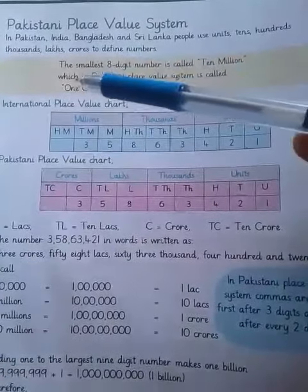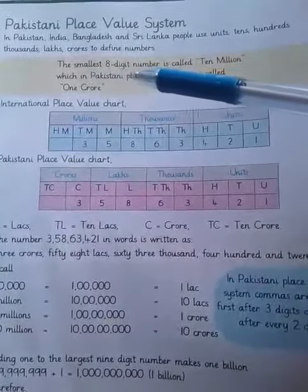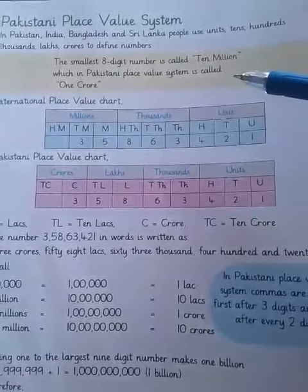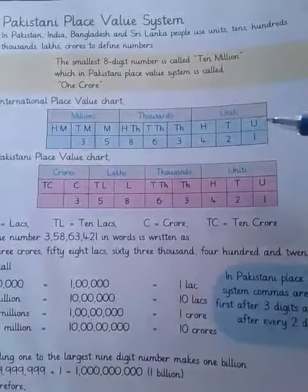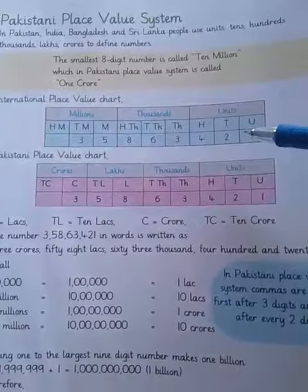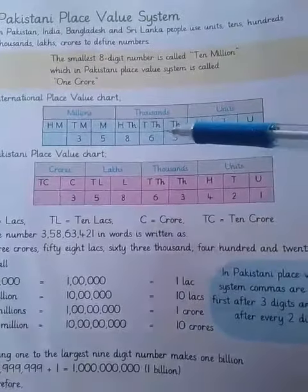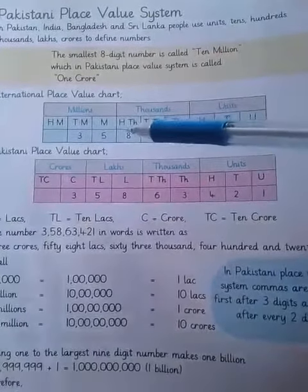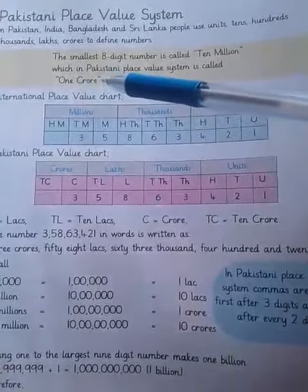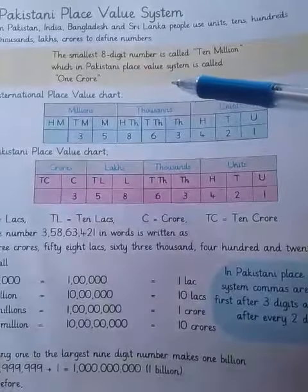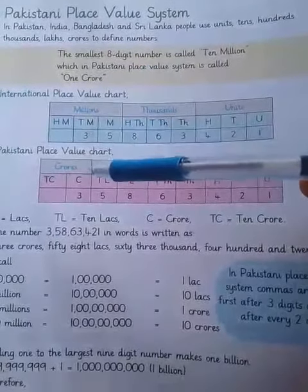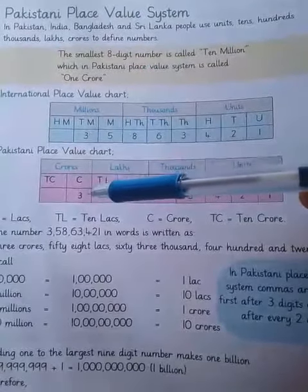The smallest 8-digit number is 10 million in the international place value system. An 8-digit number — 1, 2, 3, 4, 5, 6, 7, 8 — look here: 10 million. In the Pakistani place value system, this is called 1 crore. So 1 crore equals 10 million.